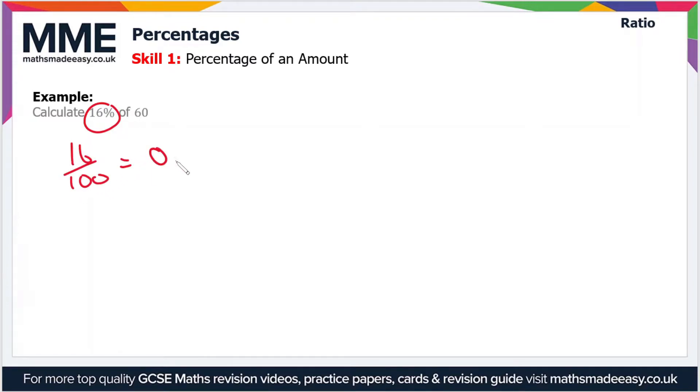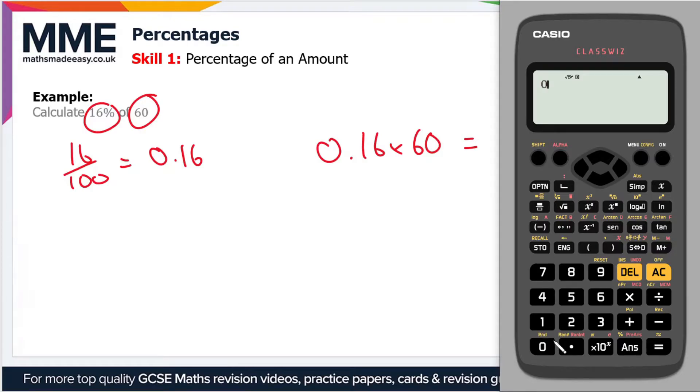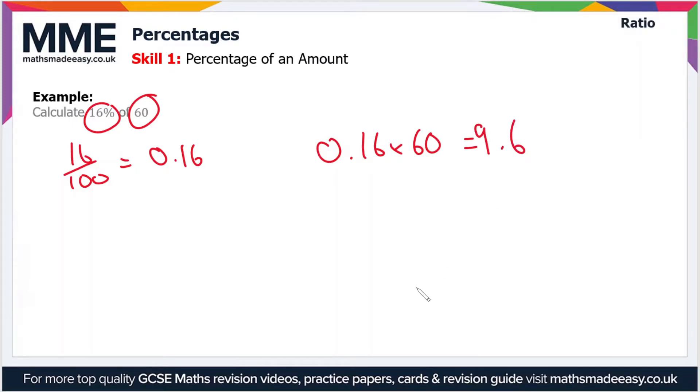So in this case that's 0.16. Now all we have to do is multiply this decimal by the value or the amount that we're finding the percentage of. So in this case it's 60. So 0.16 times 60. And if we bring up our calculator we can do it here: 0.16 times 60 equals 9.6. So 9.6 is our answer.